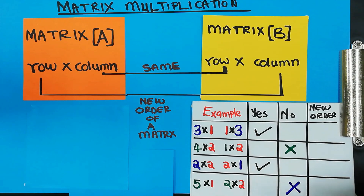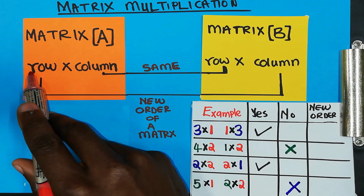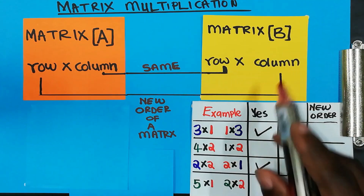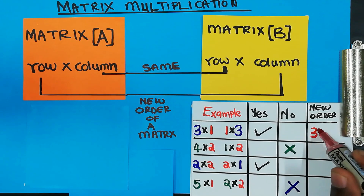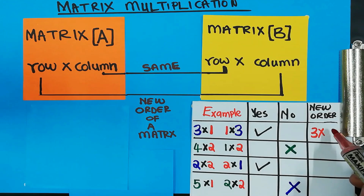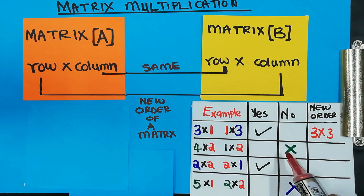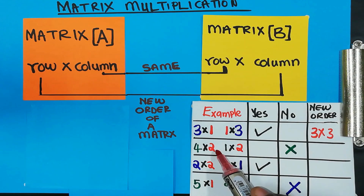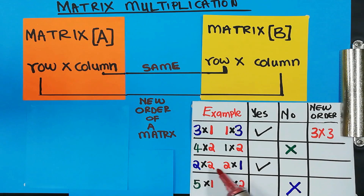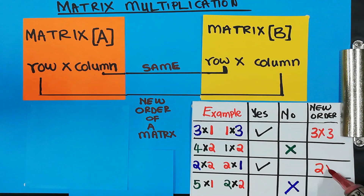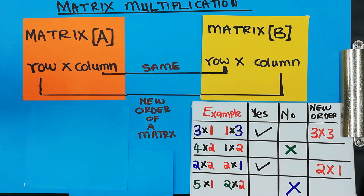Now, what is the order of the ones we decided we will continue multiplying? The order comes from the last numbers. So for the 3 by 1 and 1 by 3, you take the outer numbers — that gives you 3 by 3. We skip the incompatible ones. For the 2 by 2 and 2 by 1, the outer numbers give an order of 2 by 1.